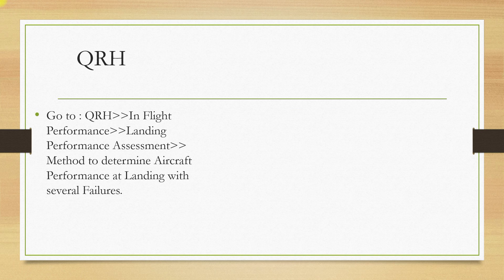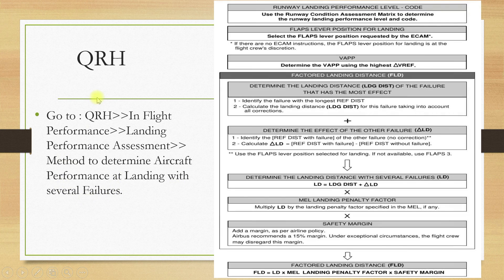Let us open the QRH: in-flight performance, landing performance assessment, and then the method to determine aircraft performance at landing with several failures. You'll end up having a table like this which gives us a step-by-step procedure on how to calculate the approach speed and the landing distance, which I'll show you in my subsequent slides.